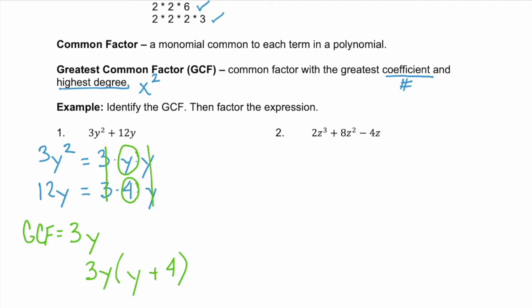Now let's look at example 2, where we have three terms. Our first term, 2z cubed, factors to 2 times three z's. The second term, 8z squared, factors to 2 times 4 times two z's.